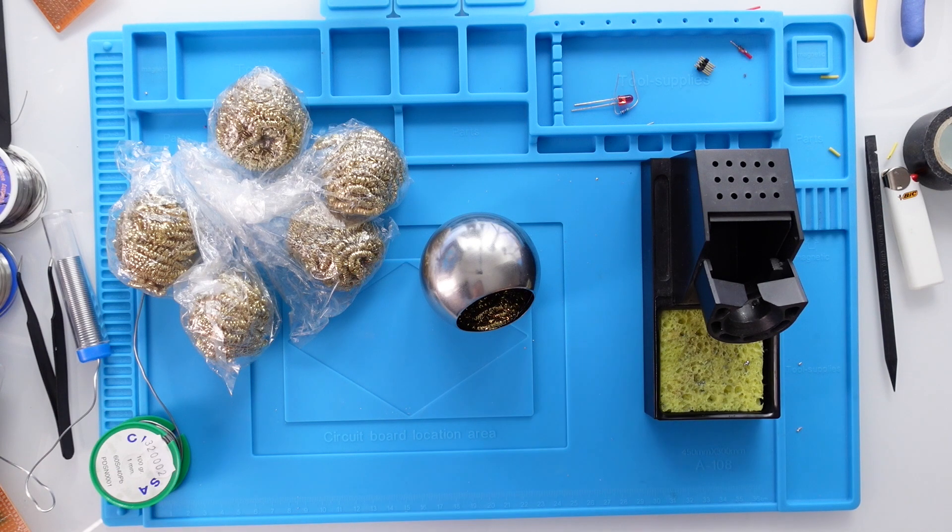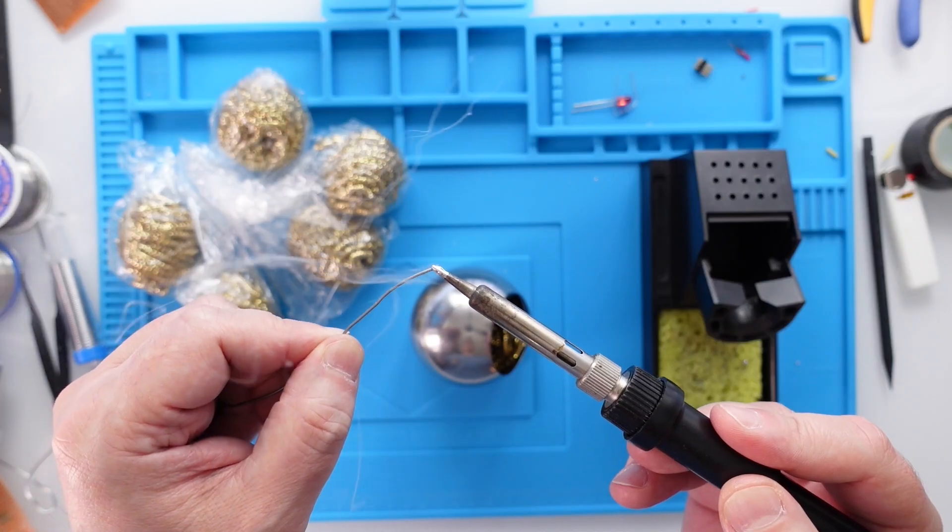Another way is to use a wire tap tip cleaner. These are very cheap and provide a very good cleaning for the tip.